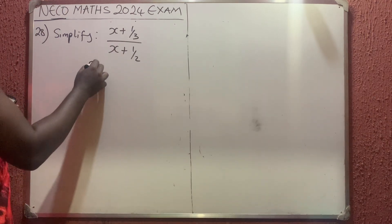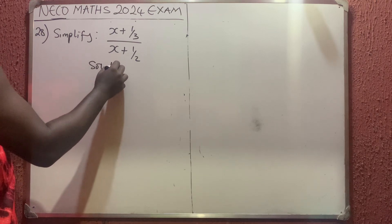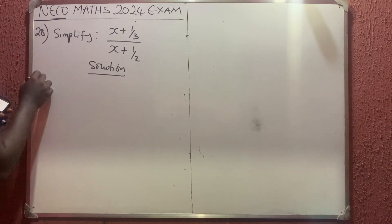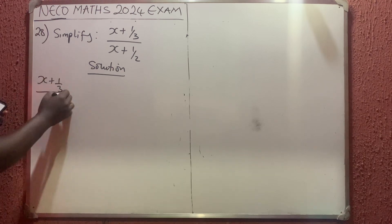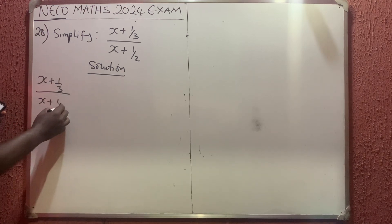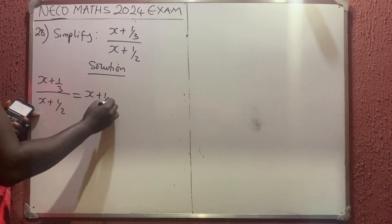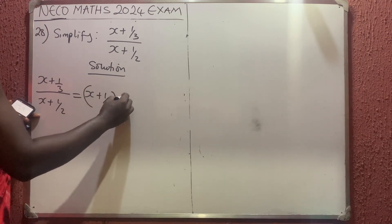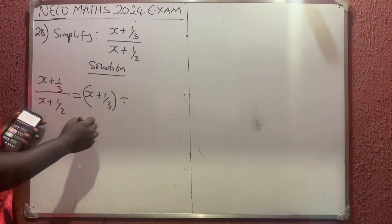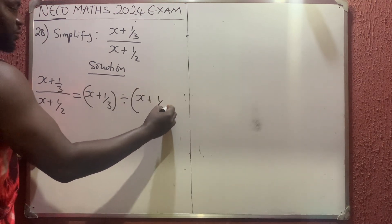Now, solution. We have (x + 1/3) over (x + 1/2). Let me rewrite this as (x + 1/3) divided by (x + 1/2), since 'over' means divided by.